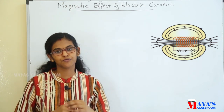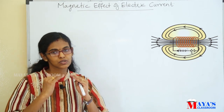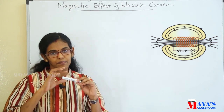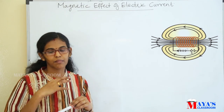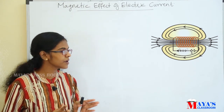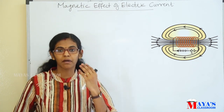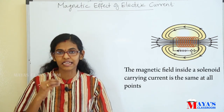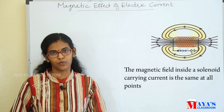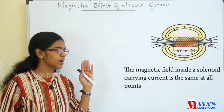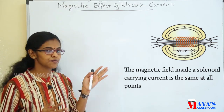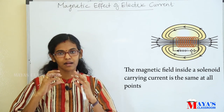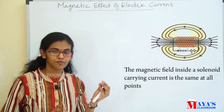The solenoid has magnetic field lines. Inside the solenoid, the magnetic field lines are parallel and uniform — the magnetic field is the same at all points inside.